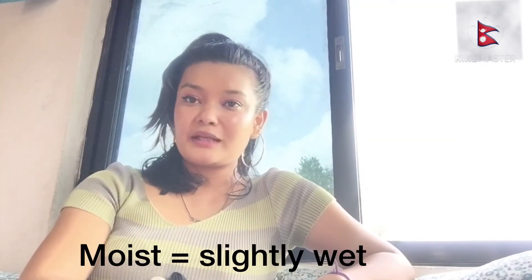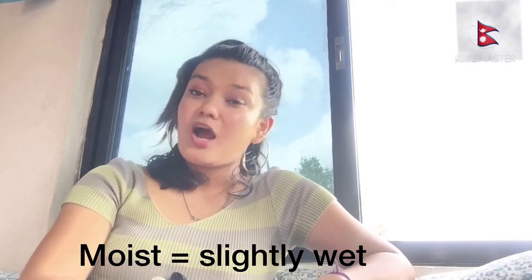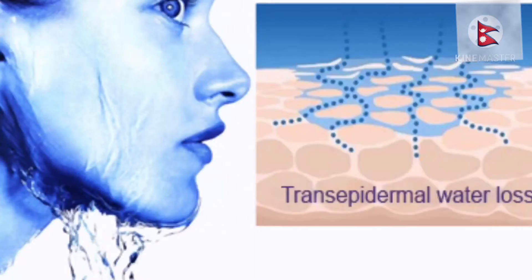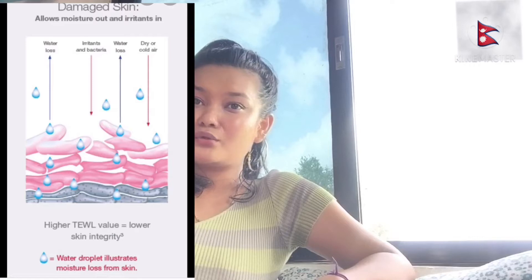Moisturizer — the name is self-explanatory: 'moist' means slightly wet. A moisturizer is a cosmetic product which helps maintain your skin's hydration. It works on the first layer, the stratum corneum, to maintain the water content and also creates a protective film so that water doesn't evaporate from your skin throughout the day.